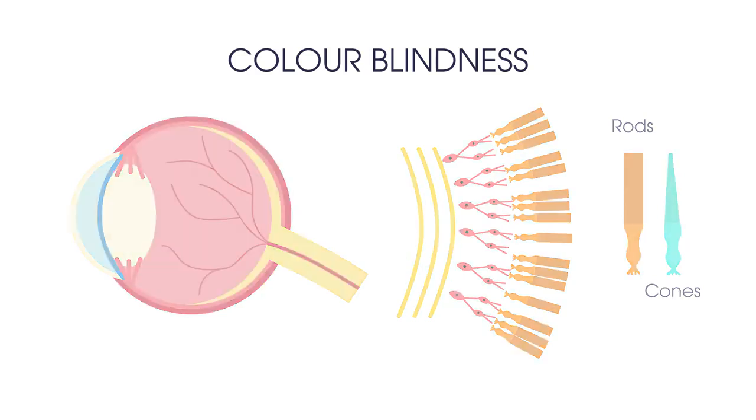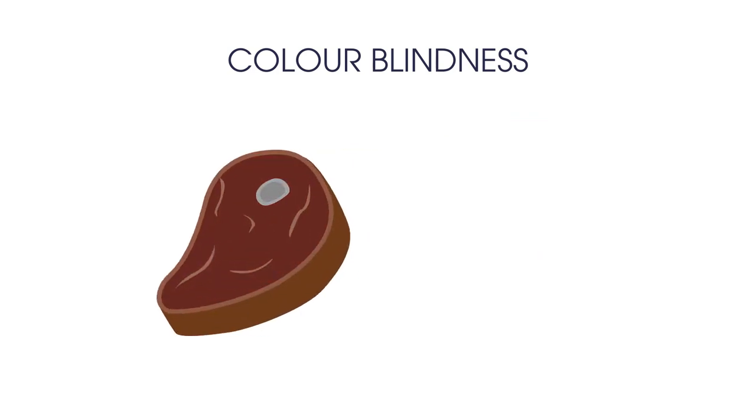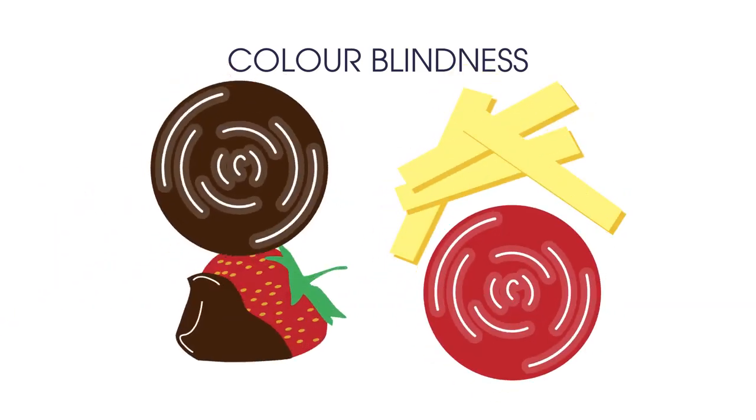Most red green colour blind people won't know if they've cooked a piece of meat rare or well done, and they're unlikely to be able to tell the difference between green and ripe tomatoes or between ketchup and chocolate sauce.